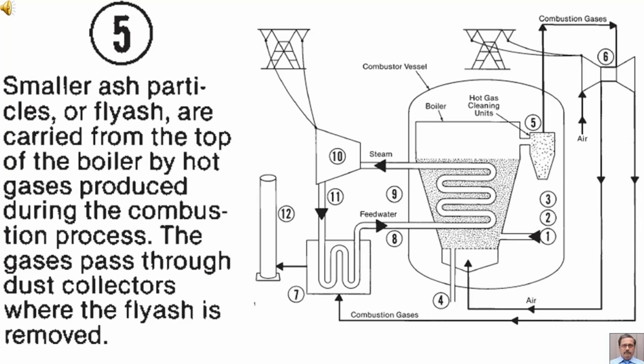Tag number 5. Smaller ash particles or fly ash are carried and collected from the top of the boiler by hot gases produced during the combustion process. The gases pass through dust collectors where the fly ash is removed.